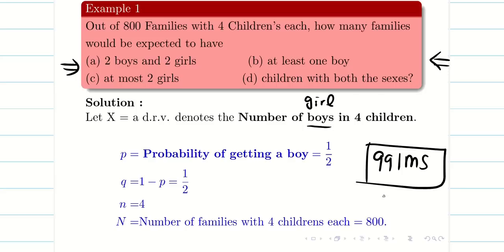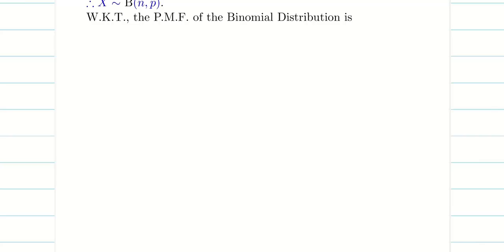For the calculator, I prefer Casio — specifically the 991 MS model which is good for shortcut calculations and is allowed by most universities.